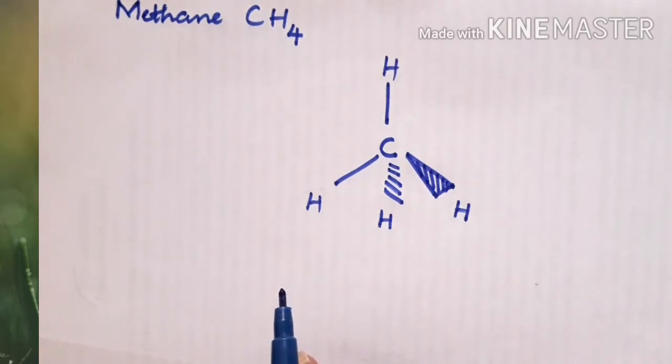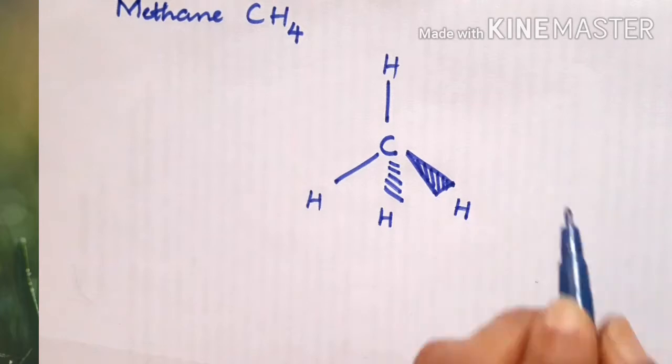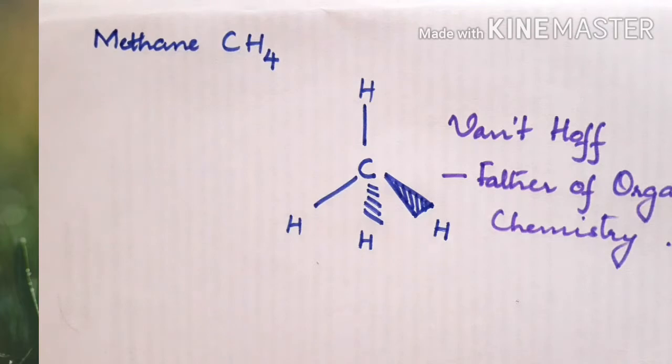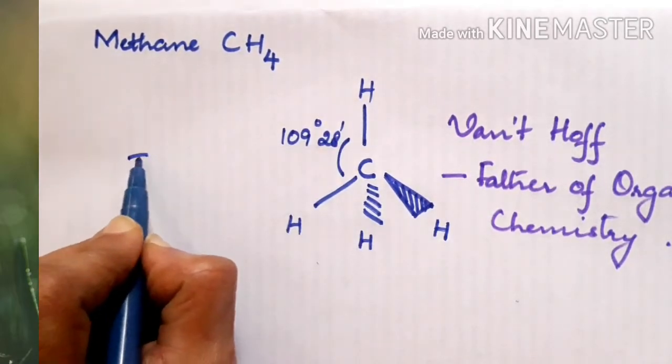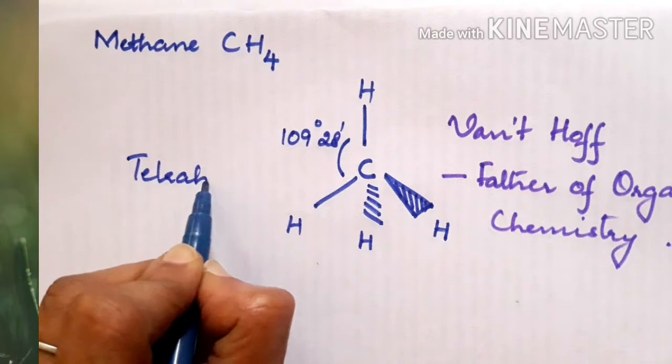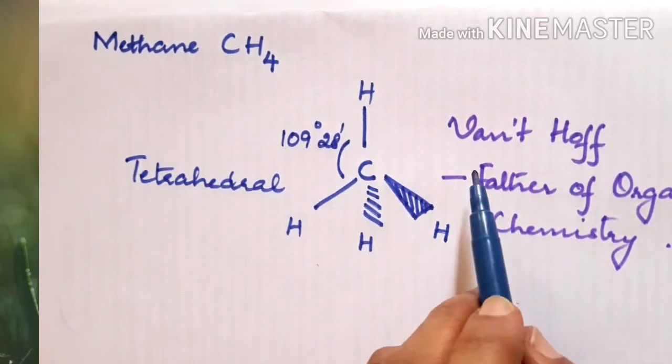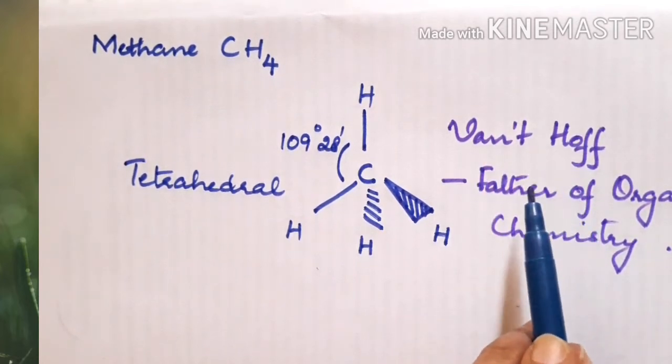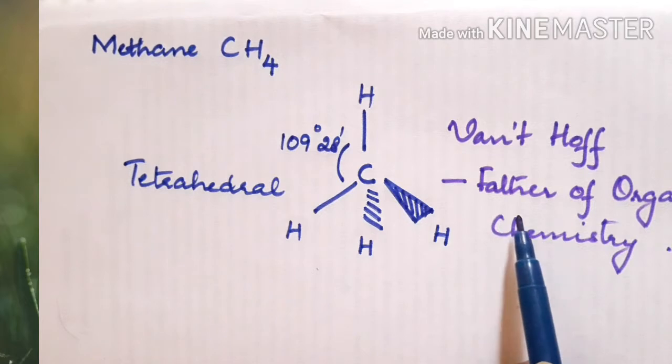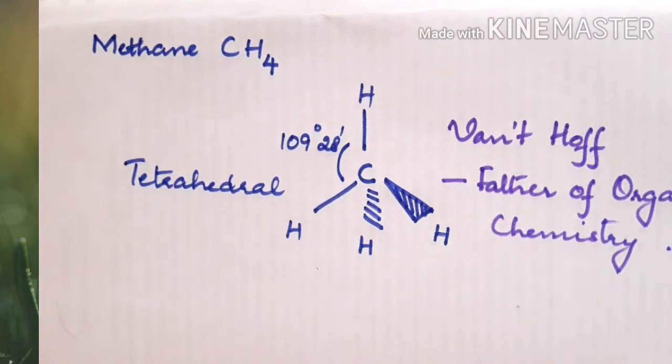So, Van't Hoff is regarded as the father of organic chemistry. Methane has a tetrahedral structure with 109 degrees 28 minutes and this was first identified by the scientist Van't Hoff.